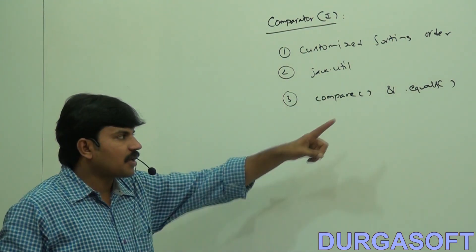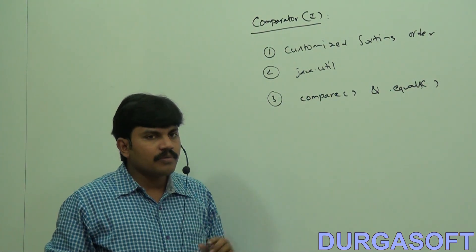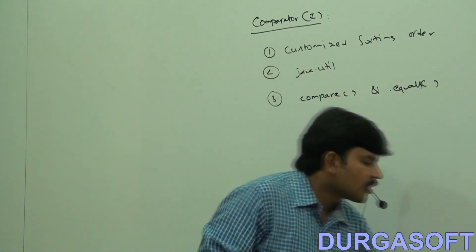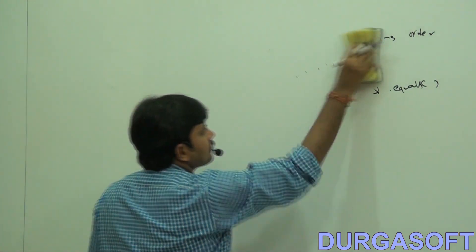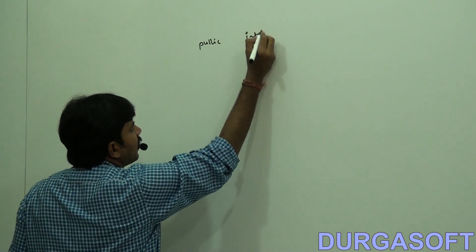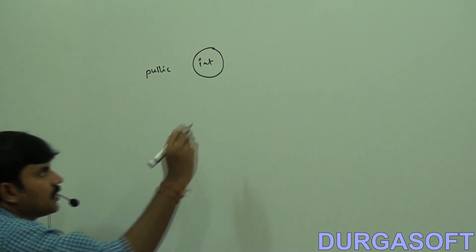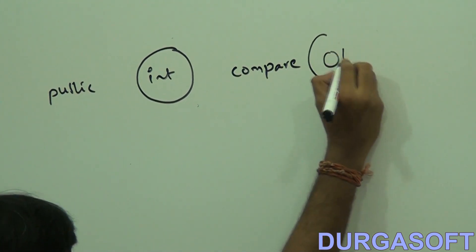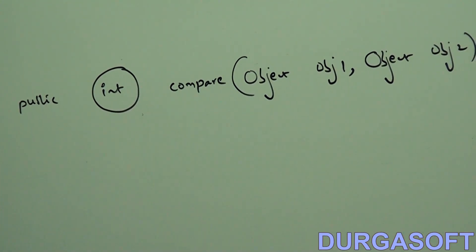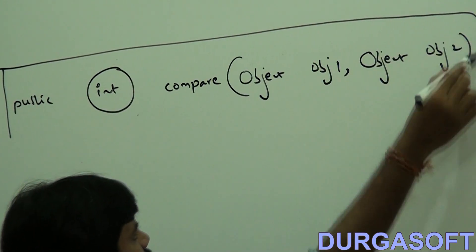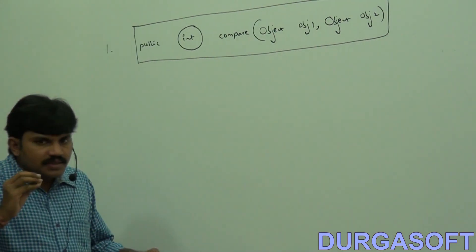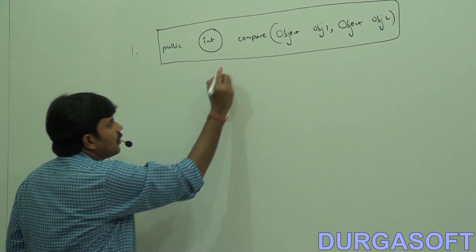The compare method plays a very important role; the equals method is mostly a dummy method. Now observe the complete prototype of the compare method: public int compare(Object obj1, Object obj2). The return type is int, same as compareTo.